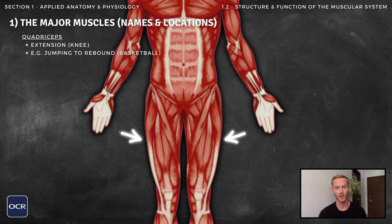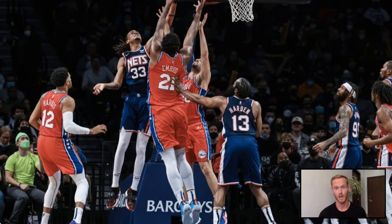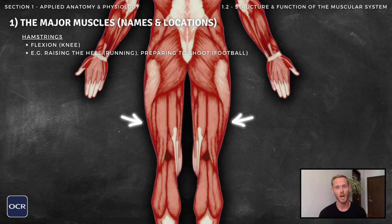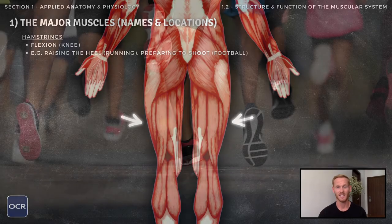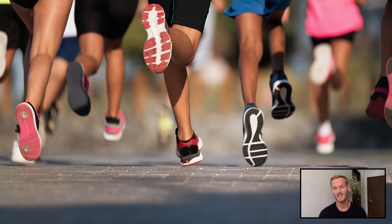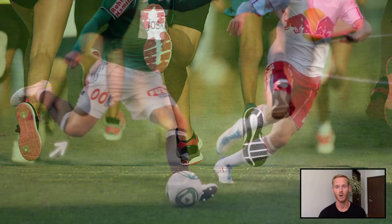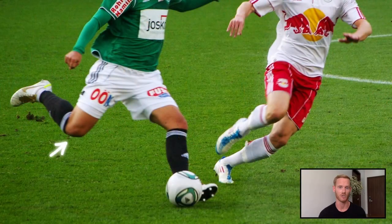Moving to the lower body, we begin with the quadriceps, which create extension at the knee. For example, a basketball player jumping to win a rebound will use the quadriceps to straighten their knees at take-off. The hamstrings sit directly behind the quadriceps and act to bend or create flexion at the knee. This can be seen when raising the heel during the running stride, or when preparing to strike a football.